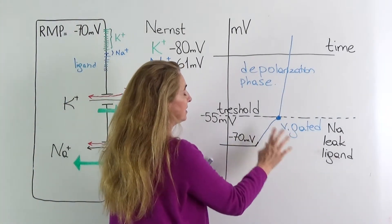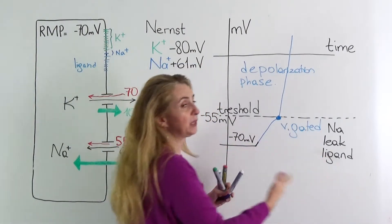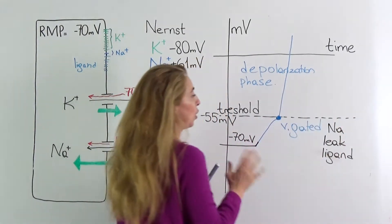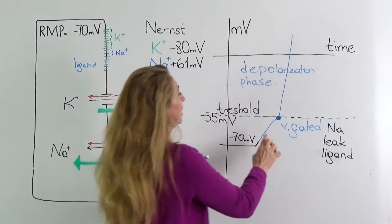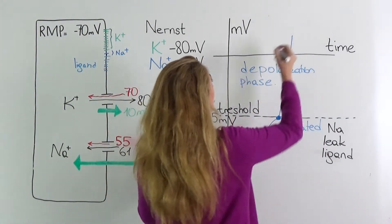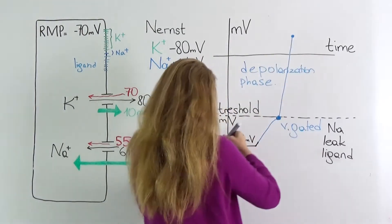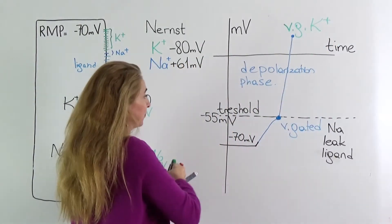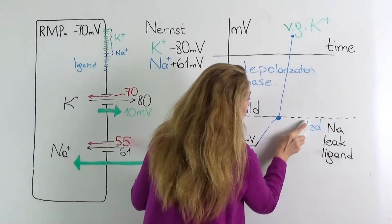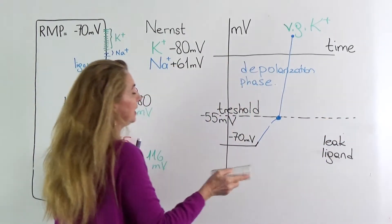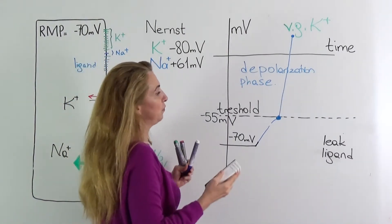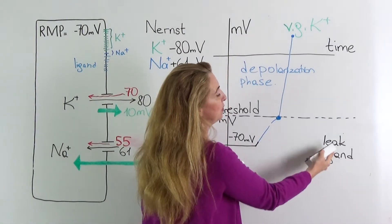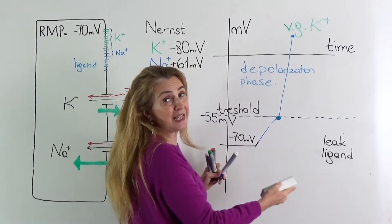When the threshold is reached, voltage-gated sodium and potassium channels open. Voltage-gated sodium channels open a bit earlier and then close. At the point where voltage-gated sodium channels close, voltage-gated potassium channels open. With voltage-gated sodium channels closed, the only channels open for sodium are leak channels and, if the stimulus is ongoing, ligand-gated channels.